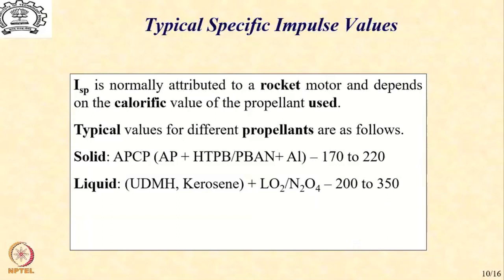When we use liquid propellants in rocket motors, there are two popular kinds which are commonly used as fuel: either kerosene or UDMH, which expands as unsymmetric dimethyl hydrazine, which is a hydrocarbon along with liquid oxygen as the oxidizer or N2O4 as the oxidizer. In these cases, we can get specific impulse between the range of 200 to 350 seconds.